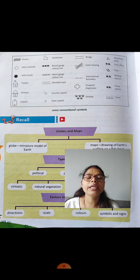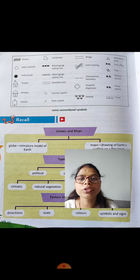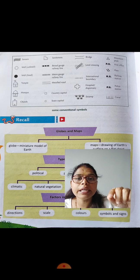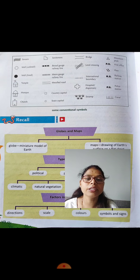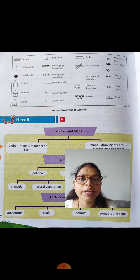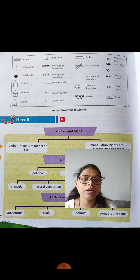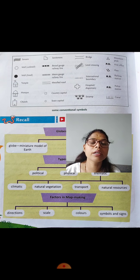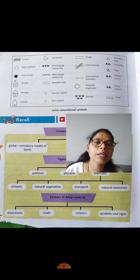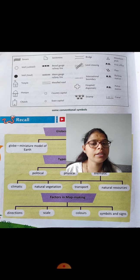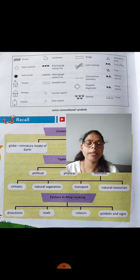On this page, some symbols and signs are given. The first symbol is of a stream. Second is a round well. Then a lined well — a deep well. Next is a temple symbol, then a mosque symbol, and a church symbol. There is also a settlement symbol, a broad gauge railway line, a meter gauge railway line, a metaled road, country capital, state capital, bridge, level crossing, international boundary, hospital/dispensary, swamp, mountain peak, post office, pass, railway station, police station, and canal.